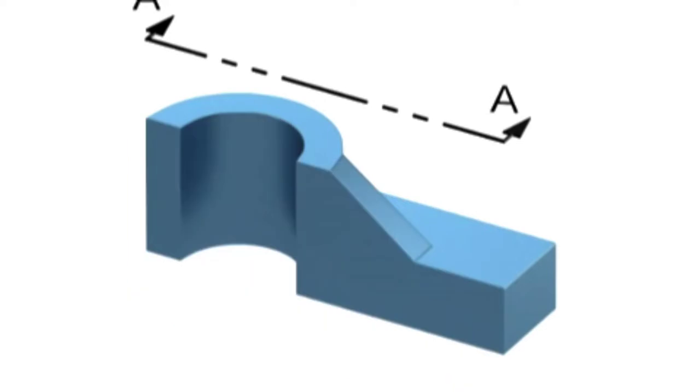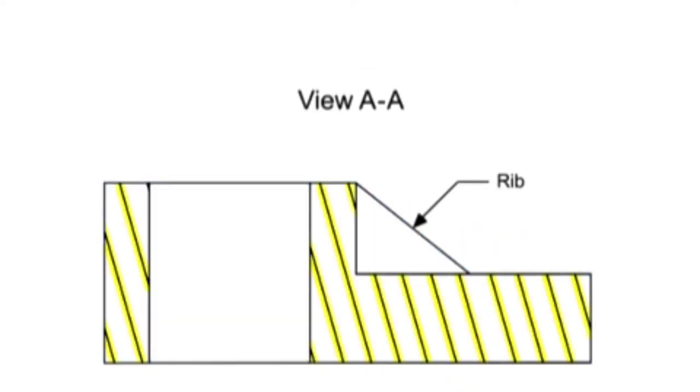Once an object is sectioned, pattern lines called section lines are added to indicate the remaining material. Only the material that has been cut or sectioned is given patterned section lines.